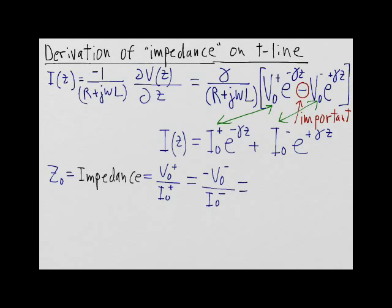And this is then equal to r plus j omega l divided by gamma, which is equal to the square root of r plus j omega l divided by g plus j omega c.